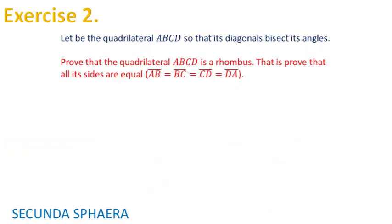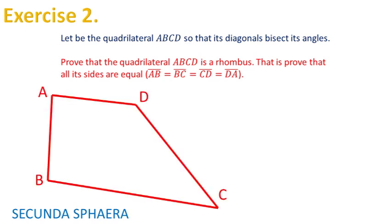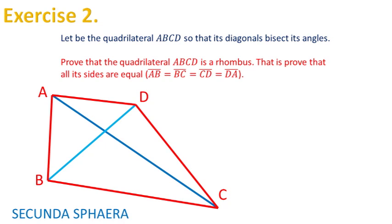It is time to continue with the second exercise. Let ABCD be a quadrilateral such that its diagonals bisect its angles. It is needed to prove that the quadrilateral ABCD is a rhombus, that is, prove that all its sides are equal. The drawing can be used as a guide, as angles that are equal as a consequence of the premise are already marked with matching colors.